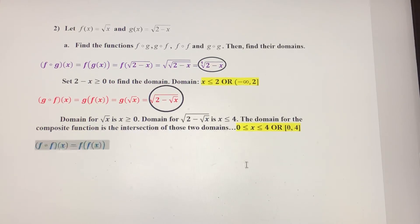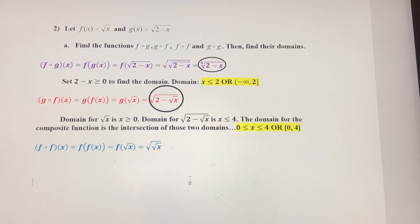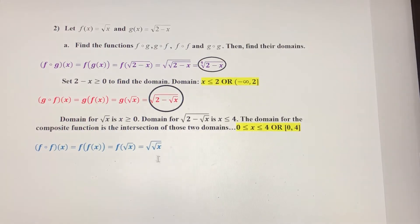Now for f of f — we're going to find f of radical x. I plug radical x in for x, giving me the square root of the square root of x. Just like before, back-to-back radicals become a fourth root. So f of f of x is the fourth root of x.